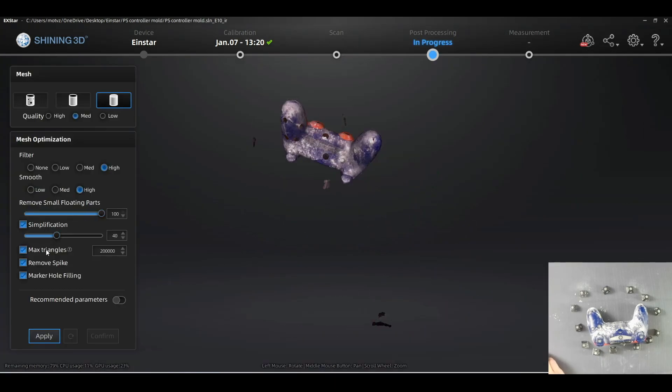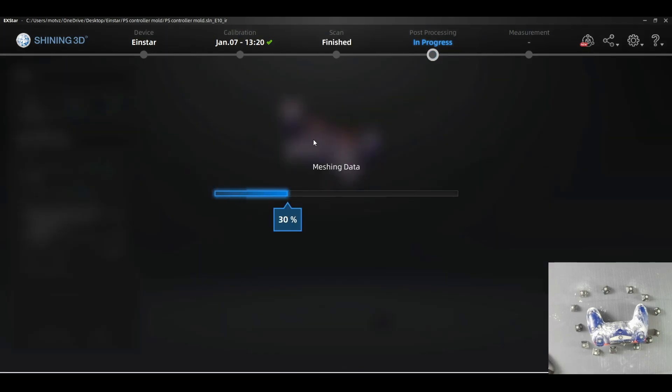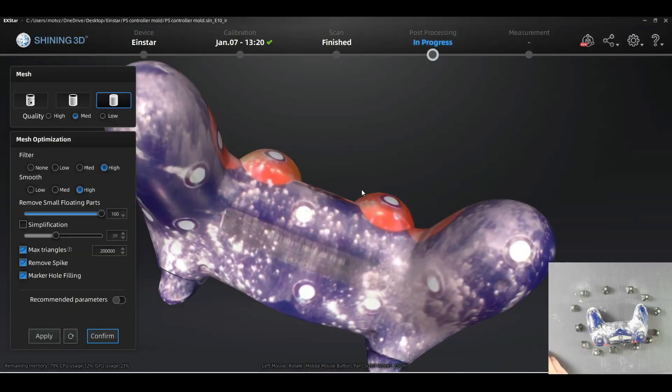Next we are going to mesh the model, which can take anywhere from 1 to 10 minutes depending on the size of your scan and your system specifications. After we have our scan data in the form of an STL, we can import it into Lubin 3D.